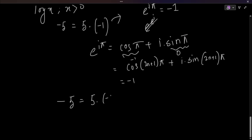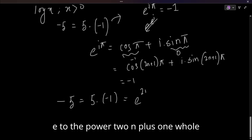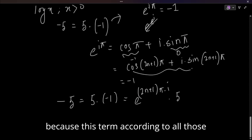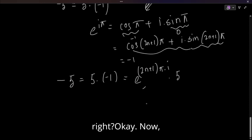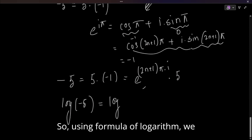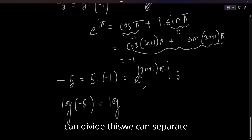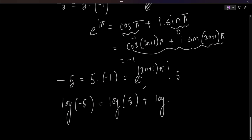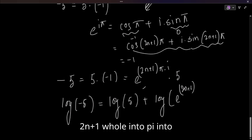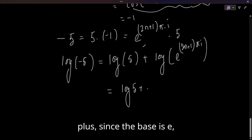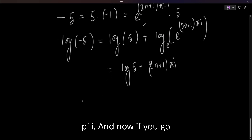So -5 = 5 · (-1) = 5 · e^(i(2n+1)π). Taking the logarithm: log(-5) = log(5) + log(e^(i(2n+1)π)). Since the base is e, this simplifies to: log(-5) = log(5) + i(2n+1)π, for all integers n.